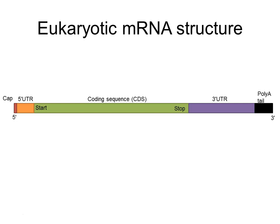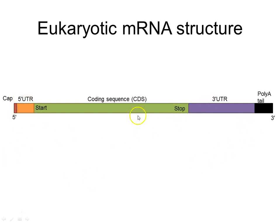Messenger RNA has a number of main parts. It's going to have a large coding sequence — a string of nucleotides that will code for a particular protein of interest. It has a start codon, normally ATG, and a stop codon. Flanking either side of this are 5' and 3' untranslated regions.